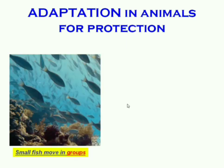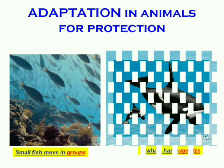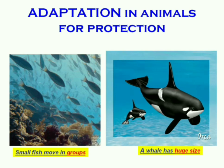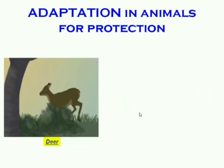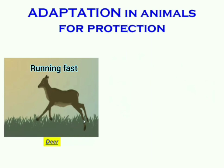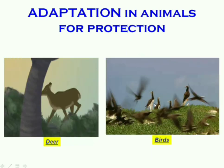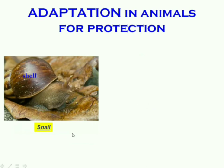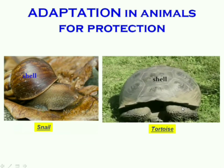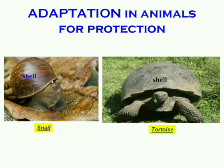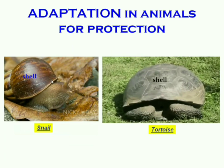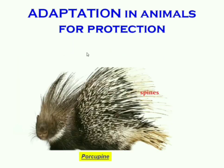Many big fishes eat small fishes, so small fishes move in groups for their protection. A whale has huge size that provides its protection. Most terrestrial animals like zebra and deer protect themselves by running very fast, and birds protect themselves by flying quickly. Some animals like snails and tortoises have shells to protect their soft bodies — as soon as they sense an enemy attacking, they go inside their shells. Porcupines have spines on their bodies to defend against enemies.